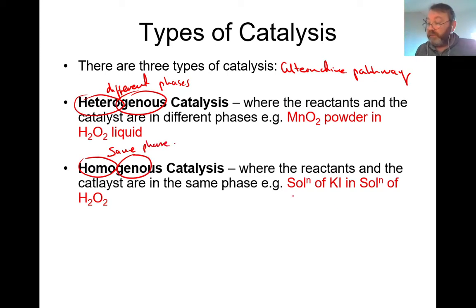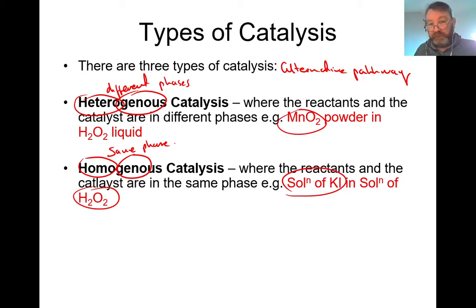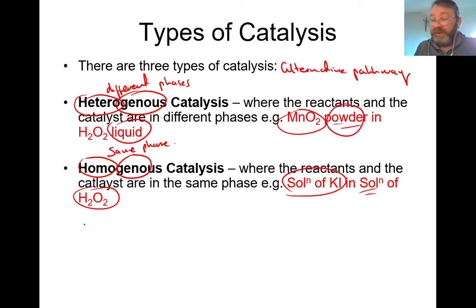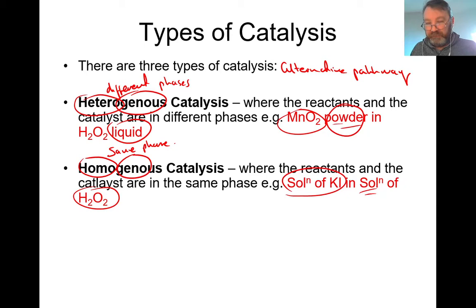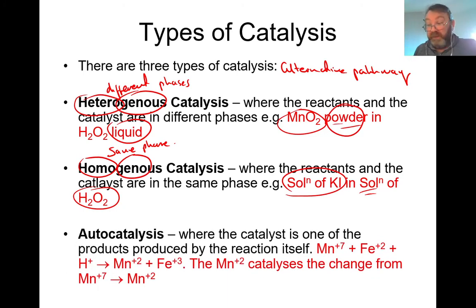Both manganese dioxide powder and a solution of potassium iodide can speed up the decomposition of hydrogen peroxide into oxygen and water. One is in powdered form, one in solution form. Powder into liquid is heterogeneous; solution into solution is homogeneous catalysis. So the first thing you always ask when introducing a catalyst: is this homogeneous - same phase - or heterogeneous - different phases? Look at the catalyst, look at the reactants: same phase is homogeneous, different phases is heterogeneous.